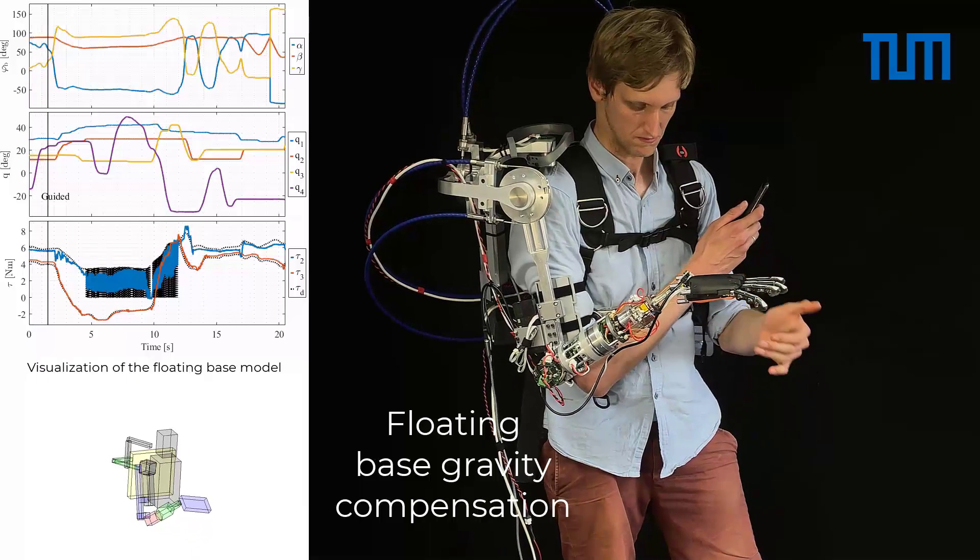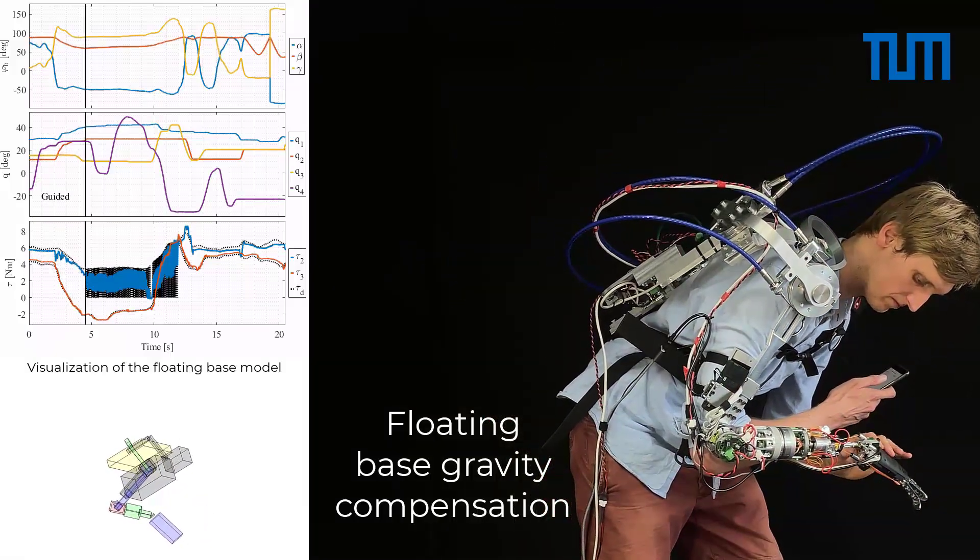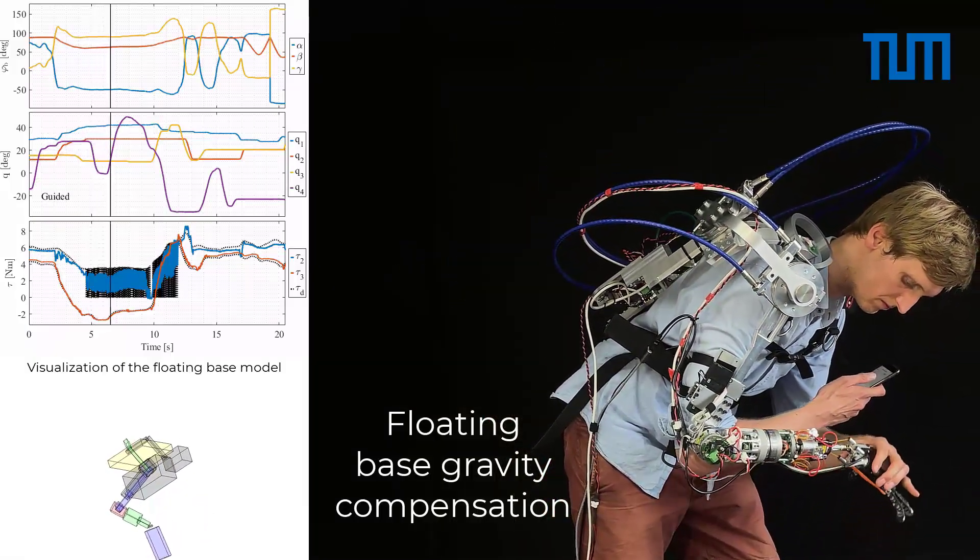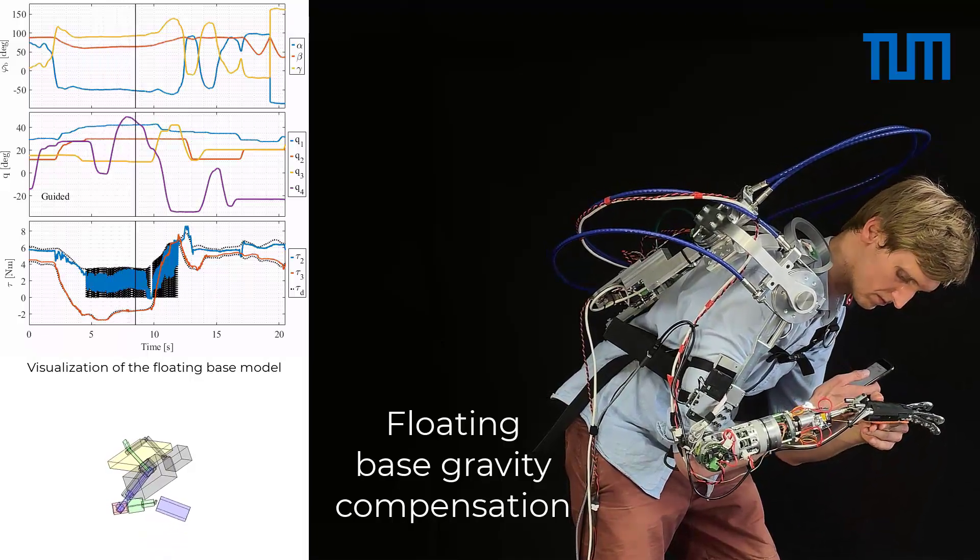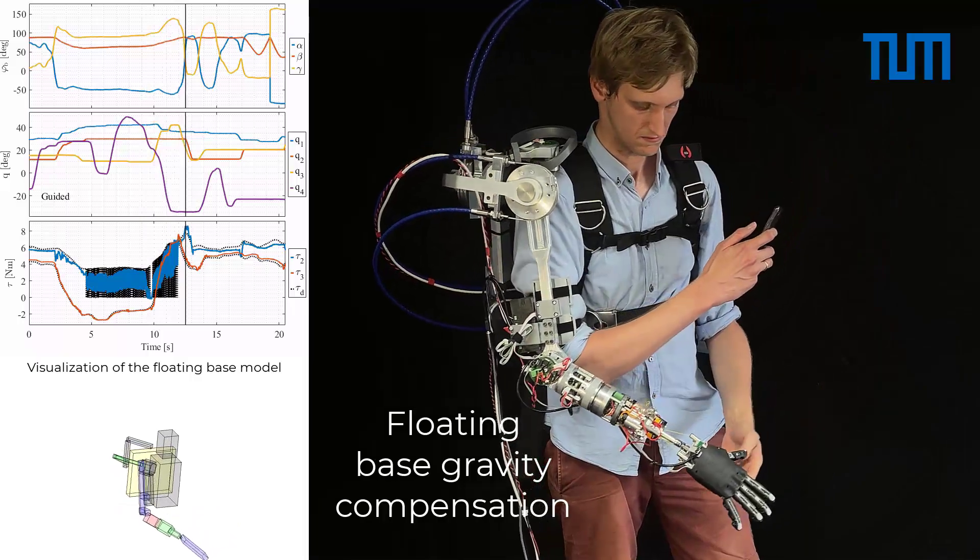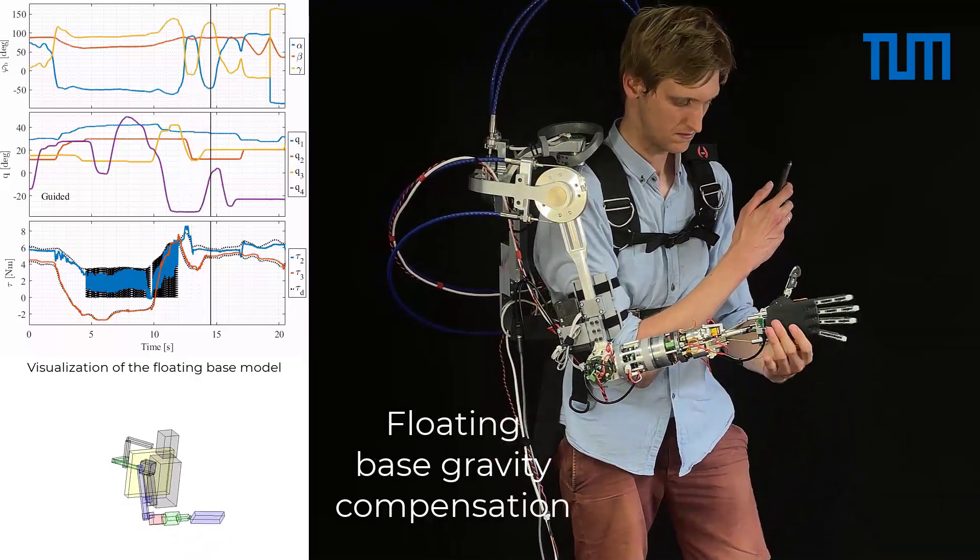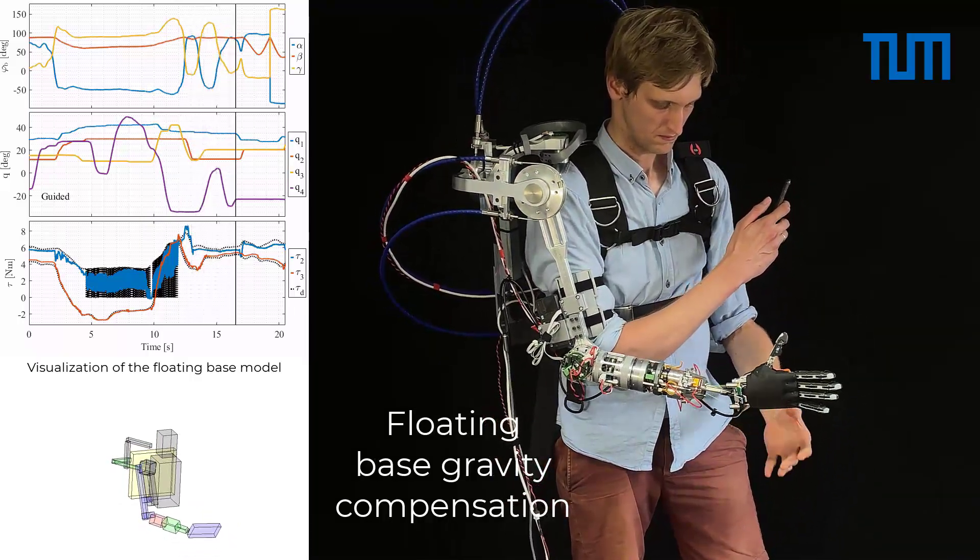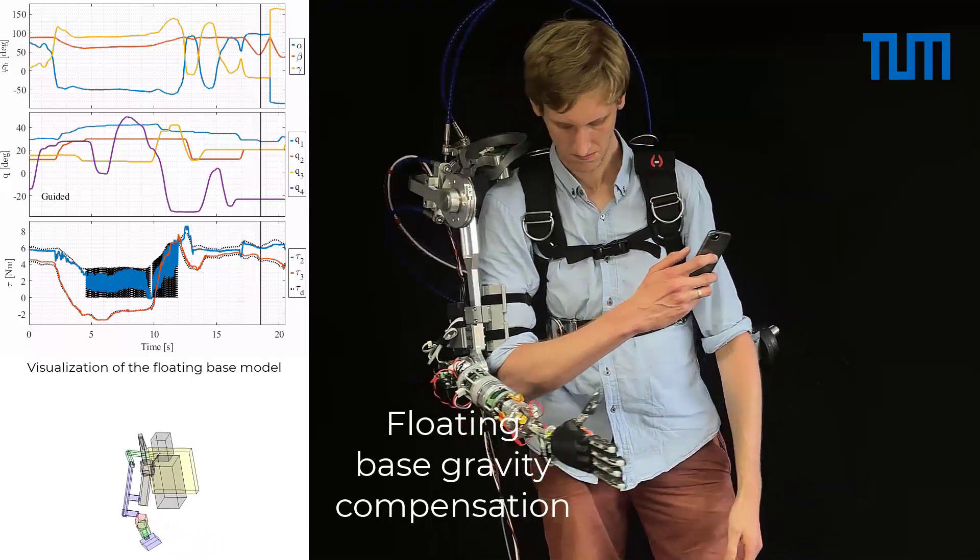Due to torque controlled robot joints and the floating base gravity compensation, the joints maintain tactile and maintain their position. The video shows how device orientation and joint angles are used to generate a kinematic model and the desired torques for the exoskeleton.